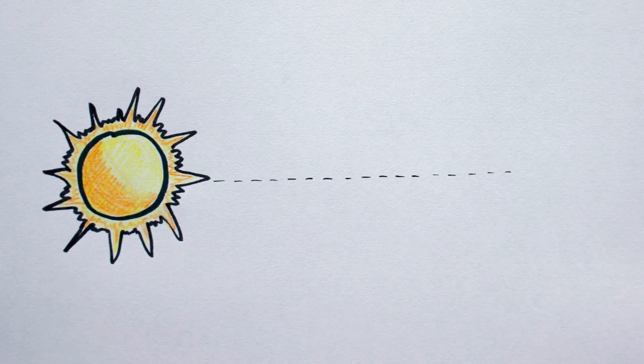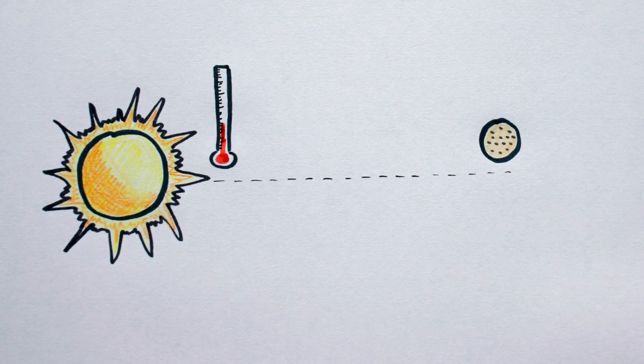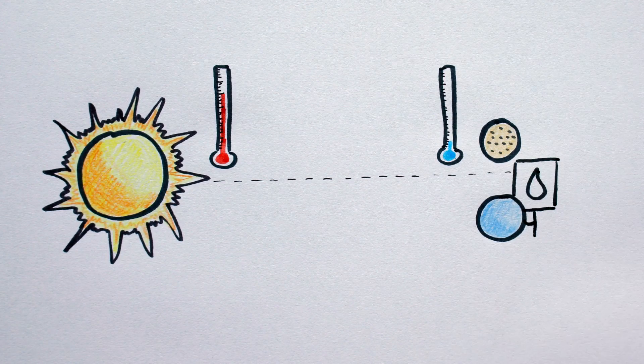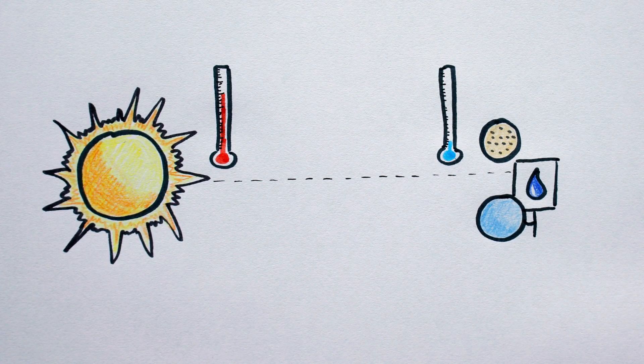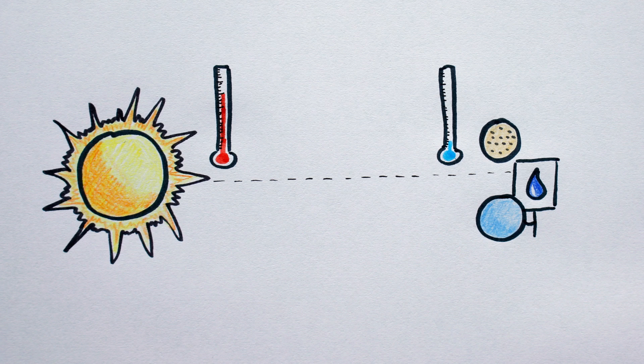We think coreless planets may form in the cooler regions further from their host stars, which is also where we expect to find water ice planets, leading some scientists to speculate that a large portion of water worlds could be coreless worlds as well.